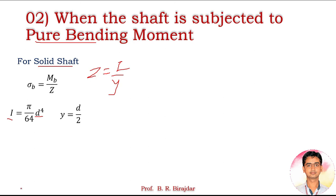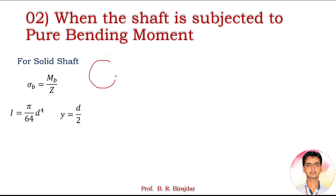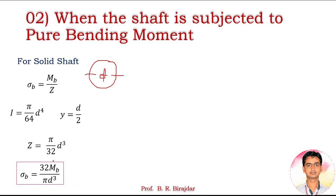For the circular solid shaft with diameter d, from the neutral axis to the outermost layer y = d/2. Therefore Z = I/y = (π/64 · d⁴) / (d/2) = π/32 · d³. Substituting this section modulus into the bending stress equation gives σ_b = 32·M_b / (π·d³) for the solid shaft.